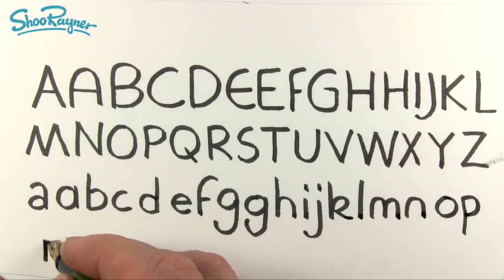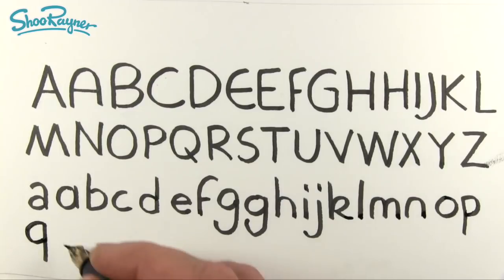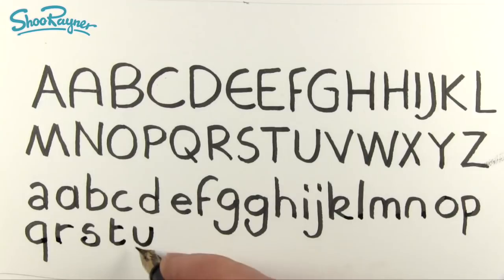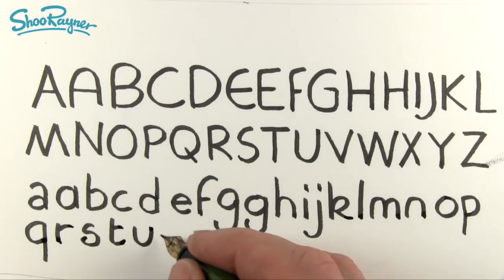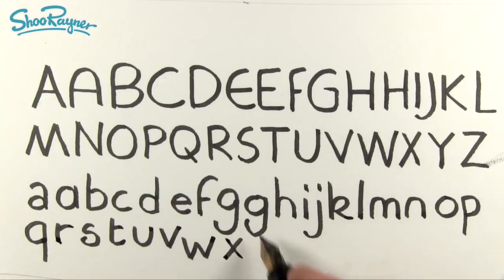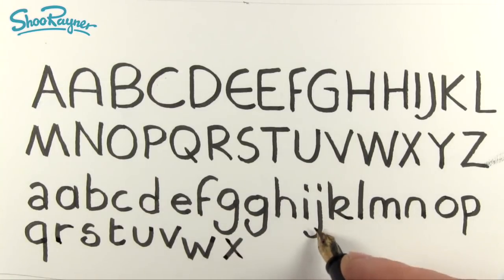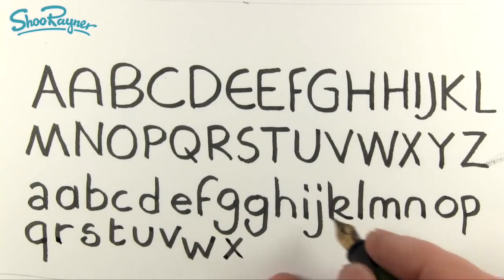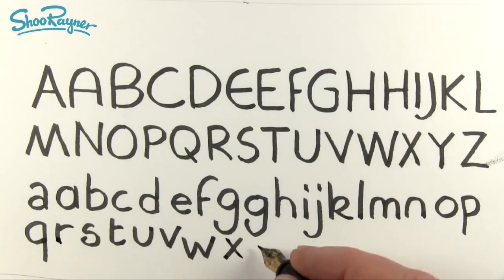And same with Q, up and around. P, Q, R, S, and T. And U, no little tails, just a straight curve around like that. R, S, T, U, V, and I'm going to come down here to fit this in. W and X.